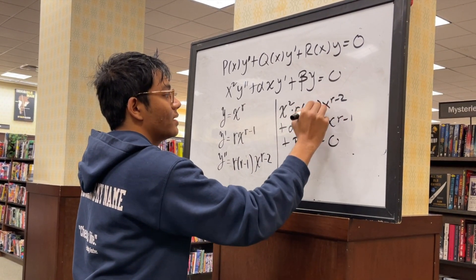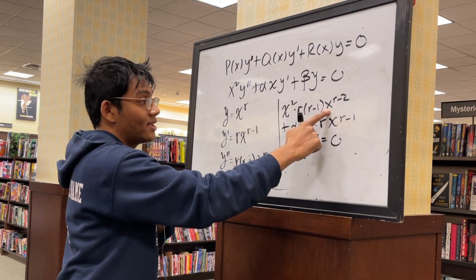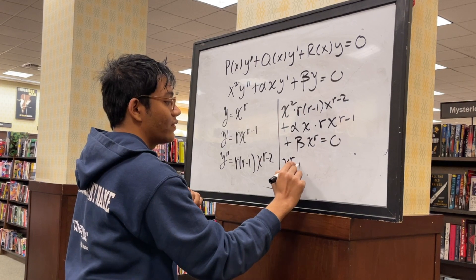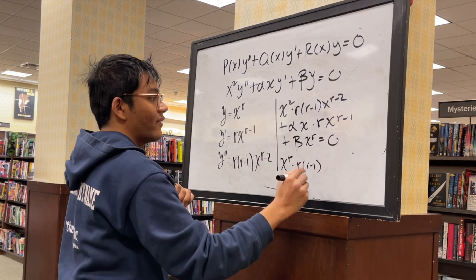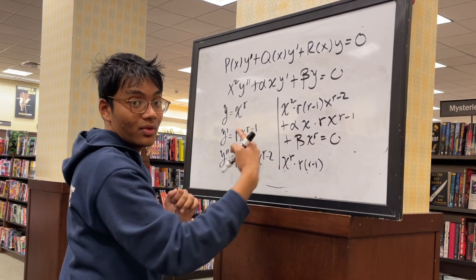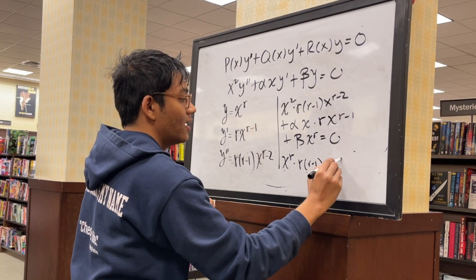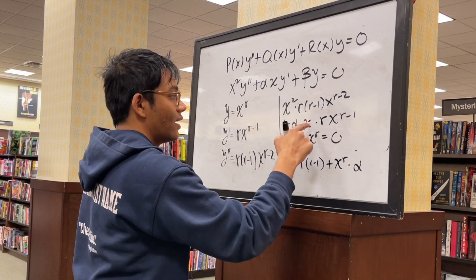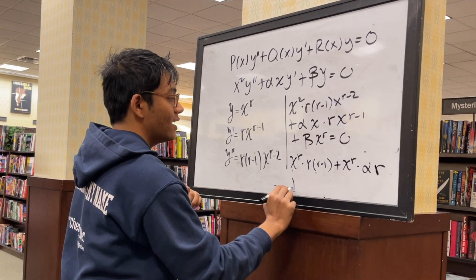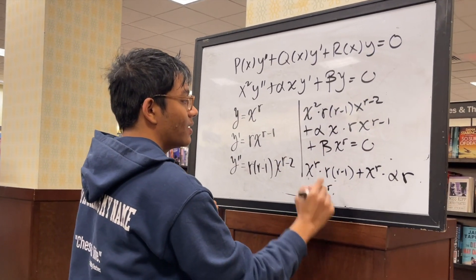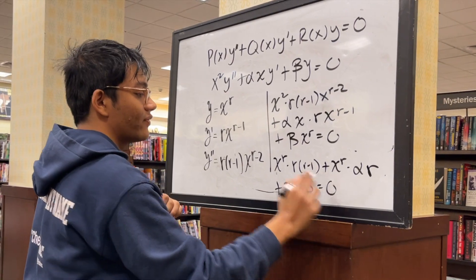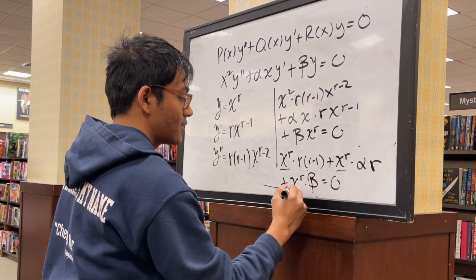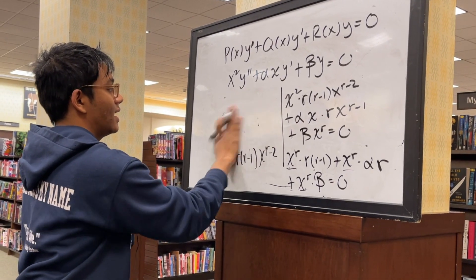Watch what happens: x squared times x to the r minus 2 becomes x to the r, leaving r(r-1). Then x times x to the r minus 1 also becomes x to the r, giving alpha r. And the last term is already beta times x to the r. So all three terms share x to the r, which we can factor out.